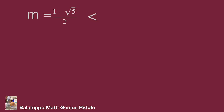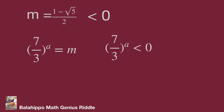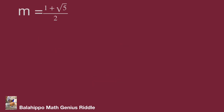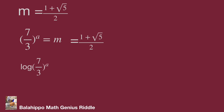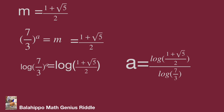Since m equals 7 over 3 power of a must be greater than 0, the negative root is rejected — it is not a real solution and is not the answer. With m equal to 1 plus square root of 5 over 2, applying logarithms: log of 7 over 3 power of a equals log of 1 plus square root of 5 over 2. So a equals log of 1 plus square root of 5 over 2, divided by log of 7 over 3.